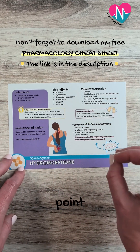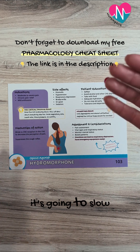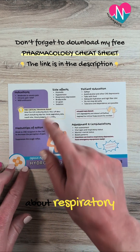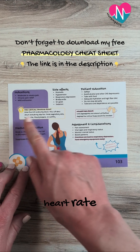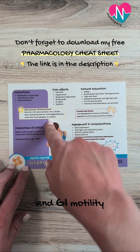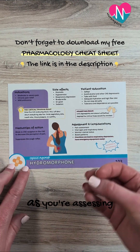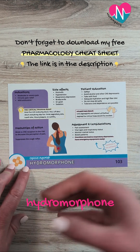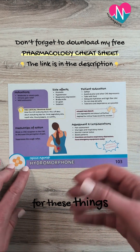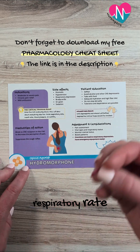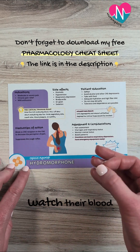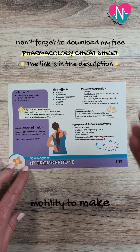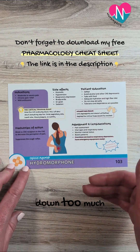A key NCLEX point to know is that it's going to slow everything down. As you're assessing patients taking hydromorphone, we want to be watching their respiratory rate, heart rate, blood pressure, and GI motility to make sure that none of these are slowing down too much.